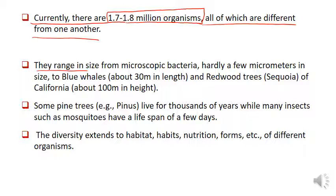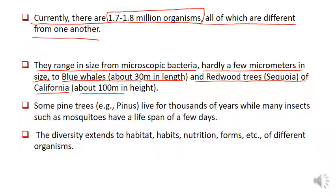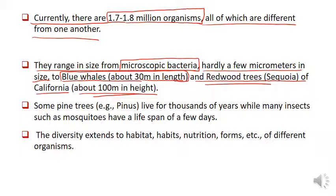They range in size from microscopic bacteria, hardly a few micrometers in size, to blue whale about 30 meters, and redwood trees — Sequoia of California — about 100 meters in height. इनका size range microscopic bacteria से लेकर blue whale तक है जो करीब 30 meter लंबा है, उसी तरह से redwood trees जो हैं वो 100 meter height के भी हैं.